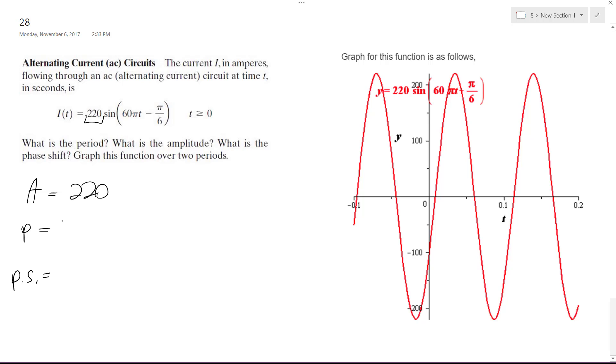Period is going to be equal to 2 pi divided by omega, so in this case it's the coefficient in front of t, which is 60 pi. So we're going to get 1 over 30 is the time period. So this thing's spinning pretty fast.